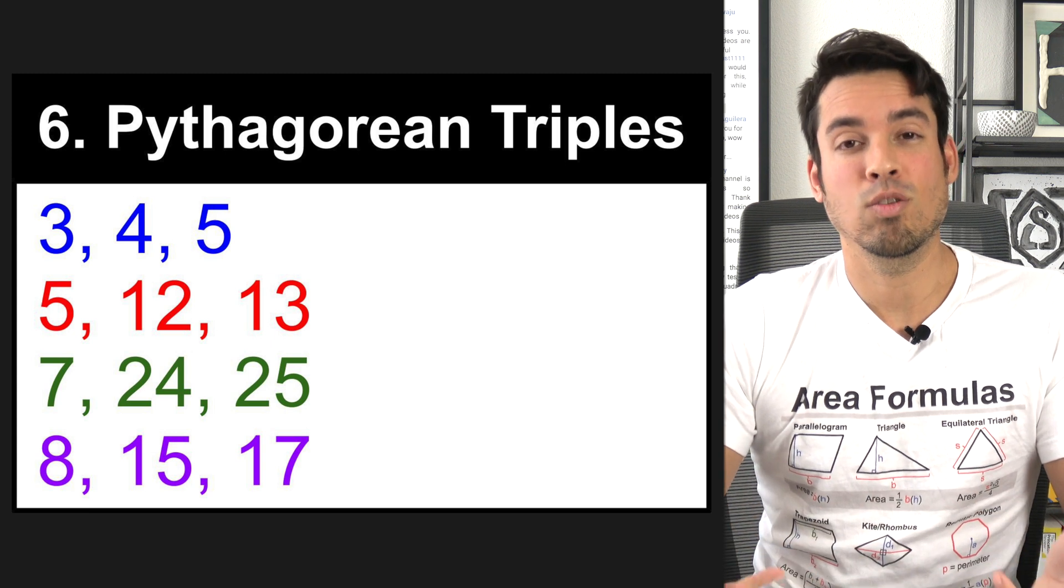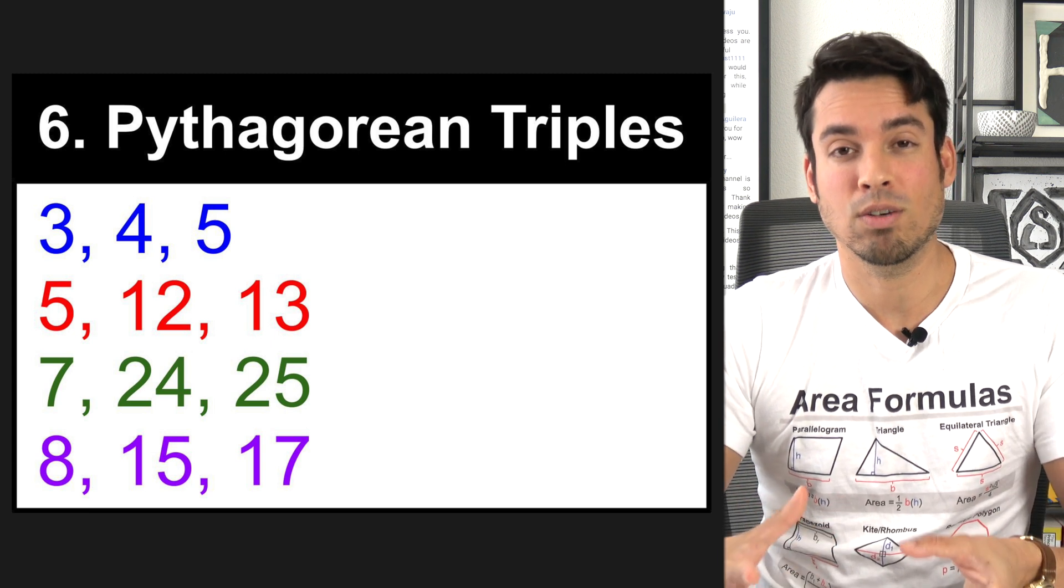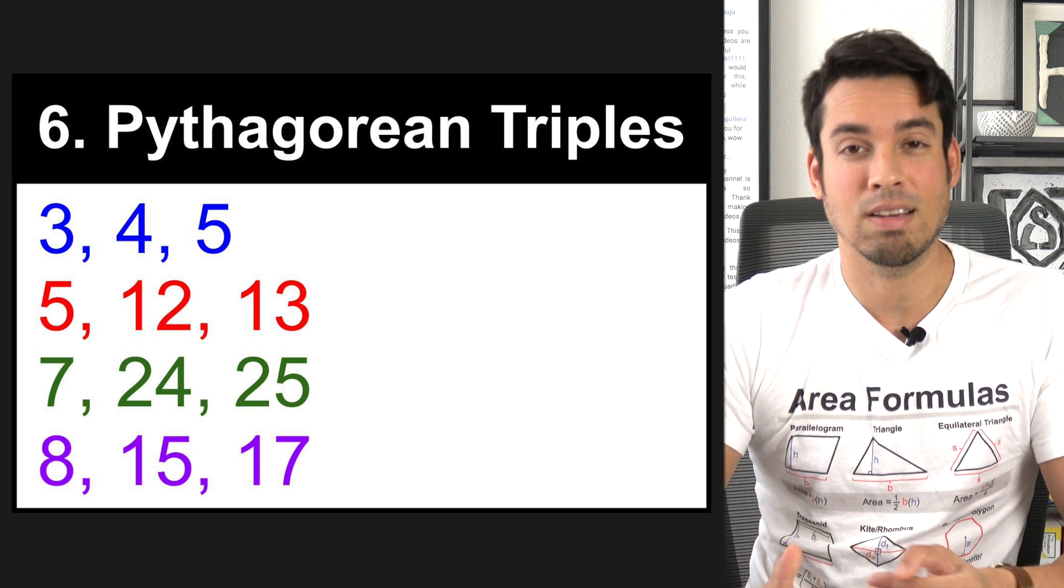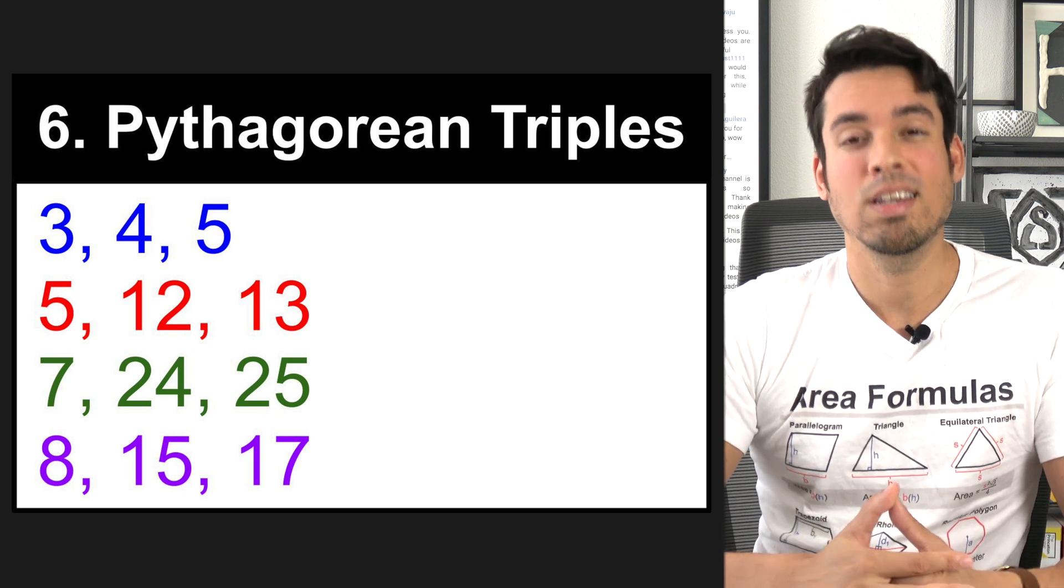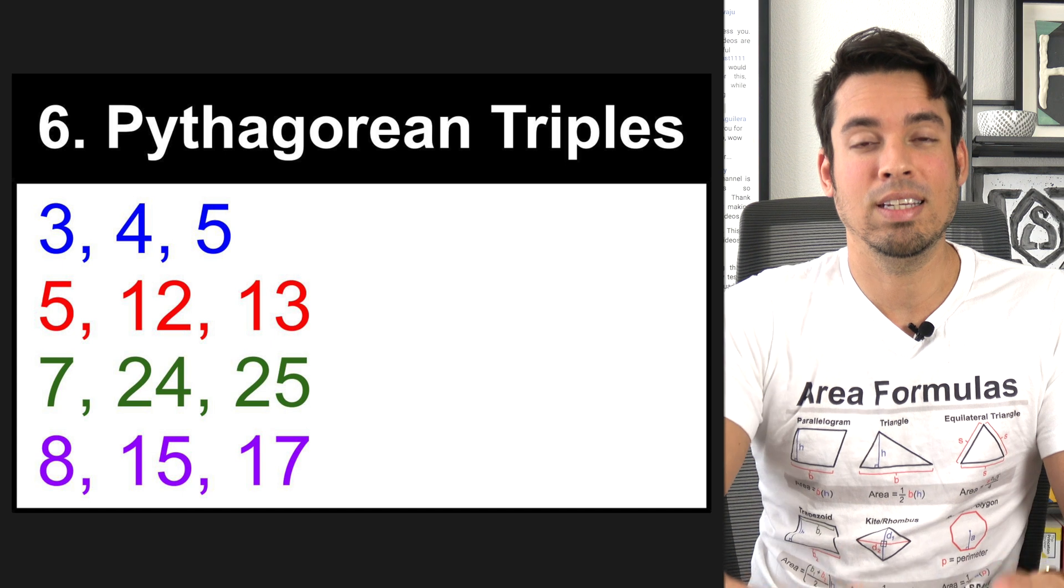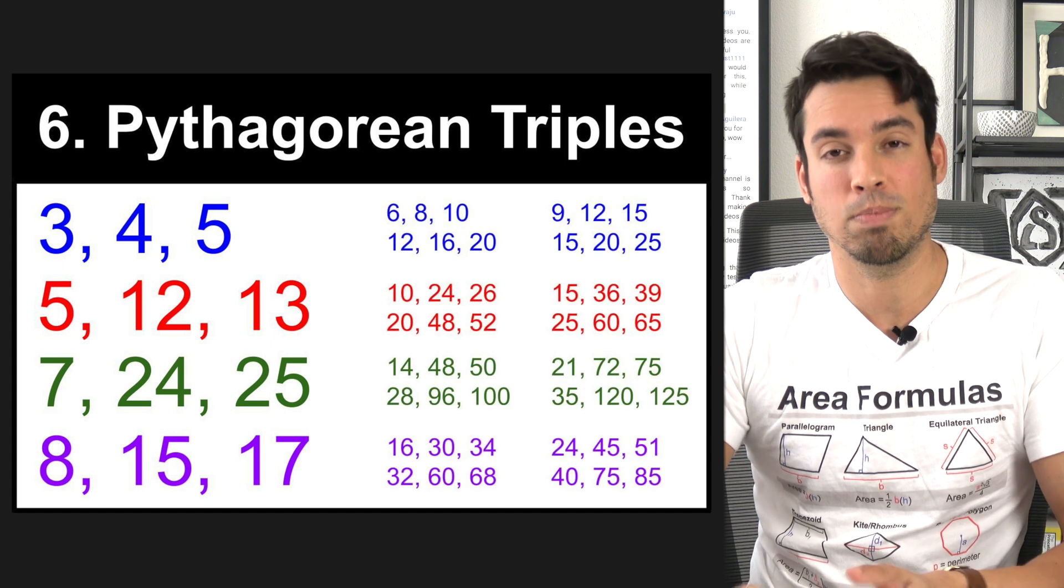If you do happen to forget these, it's not the end of the world because you can always derive it from Pythagorean's theorem. But knowing these can save you some time. And one more thing is you want to be aware of not only these core Pythagorean triples, but also their multiples.